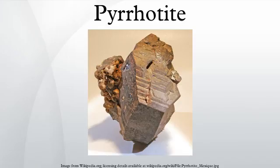Pyrrhotite exists as a number of polytypes of hexagonal or monoclinic crystal symmetry. Several polytypes often occur within the same specimen. Their structure is based on the NiAs unit cell. As such, Fe occupies an octahedral site and the sulfide centers occupy trigonal prismatic sites. Materials with the NiAs structure often are non-stoichiometric because they lack up to a 1/8 fraction of the metal ions, creating vacancies.